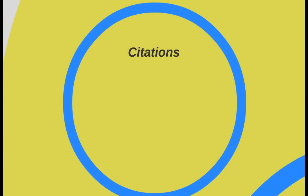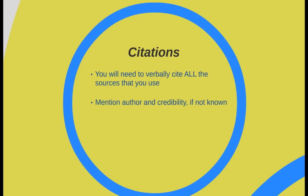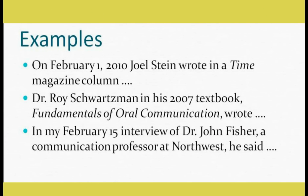Keep in mind this rule of thumb: if you didn't know it before you encountered the source, cite it. In the speech and in your outline, you need to put where you got it from — verbally cite it, meaning orally tell your audience where you got it from. You can mention the author and their credibility if it's not known to your audience, or if there's no author, cite the organization, website, or wherever you got it. Examples: 'Joel Stein wrote in Time Magazine,' 'Dr. Schwartzman in his textbook,' or 'Dr. Fisher, a communication professor at Northwest' — that last one cites the credibility, which is important if your audience doesn't know the source's authority.